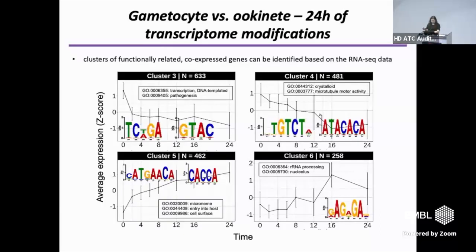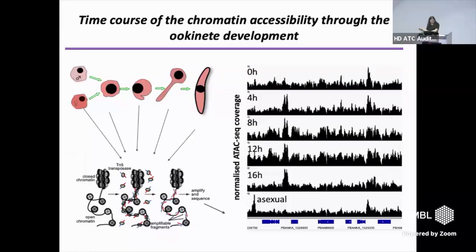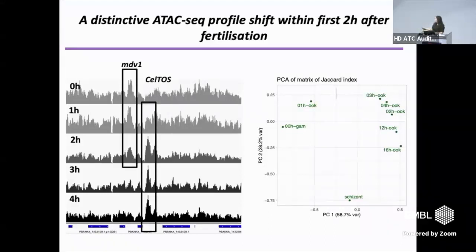To see if this regulation happened at the DNA or RNA level, we generated a time course of chromatin conformation at different stages of ookinete differentiation using ATAC-seq, which identifies open chromatin regions likely to bind transcription factors or enhancers. Looking at the raw data, you can see differences in profiles at different time points, all very different from the profile generated from sexual parasites. Many peaks in front of gametocyte-specific genes gradually decrease, while peaks for ookinete-specific genes gradually increase.